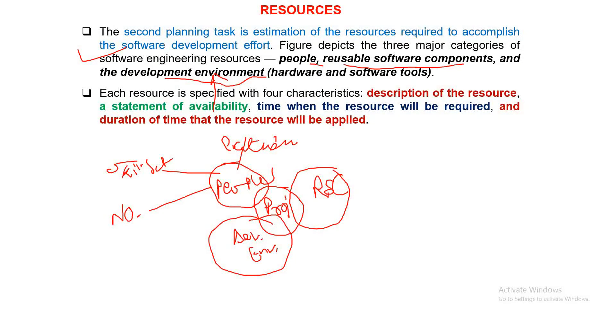The experience and skill set needed must be identified. You cannot go ahead with a software development project using all freshers — you definitely need some experience. But you also cannot go with all experienced people because the budget will overshoot. So you need a proper balance between expert programmers, good programmers, and freshers — a proper combination with clearly identified numbers.